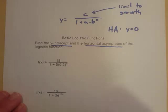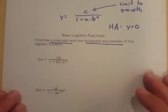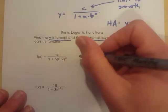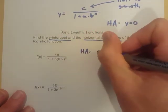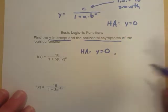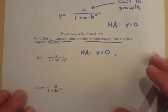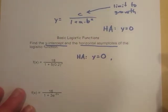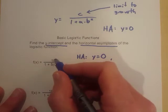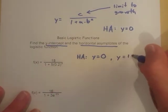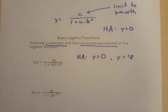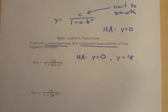So in any of these different functions, if we list out our horizontal asymptotes first, one of them is going to be 0. Make sure you write it as an equation, y equals 0. The other one is basically just going to correspond to this limit to growth. And so in this case, we've got y equals 18. That's going to be our two horizontal asymptotes.